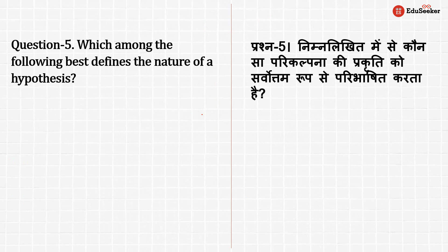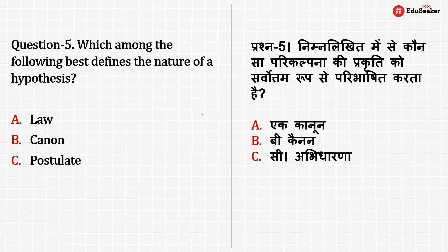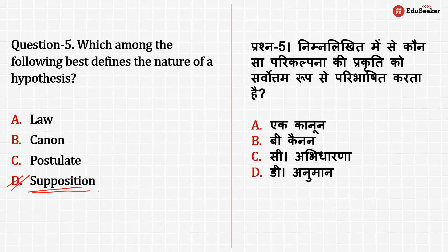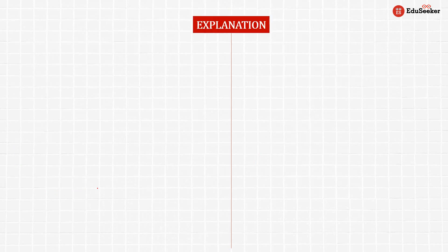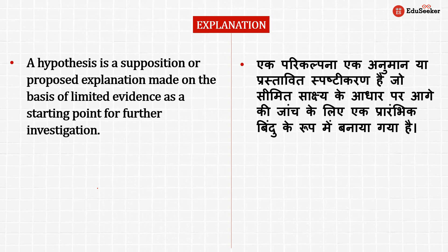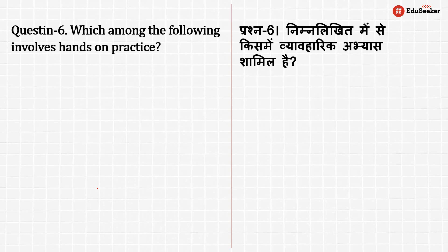The next question is: which among the following best defines the nature of a hypothesis? The correct answer is option D — supposition. A hypothesis is a tentative statement — a presumption or assumption. It is a supposition or proposed explanation made by the researcher on the basis of limited evidence as a starting point for further investigation or research studies.